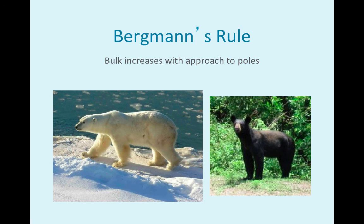Bergmann's rule is about bulk — you're going to get bigger and rounder the closer you are to the poles. The polar bear's ears are smaller and it's just a bulkier organism. You're trying to reduce your surface area-to-mass ratio because you need that extra bulk to survive and keep your internal organs warm. I won't ask you to name these rules — just understand how adaptations change as you move from one biome and climate to another.